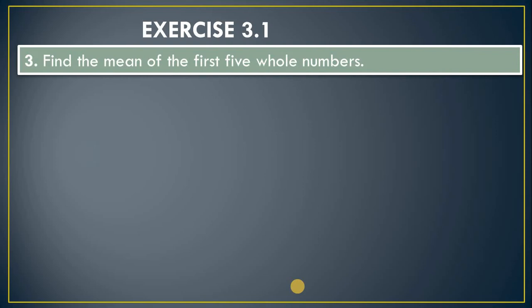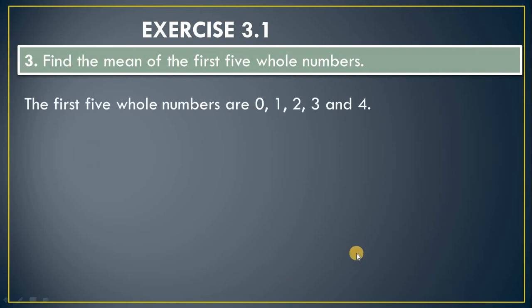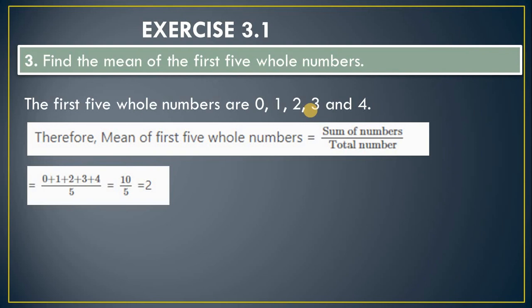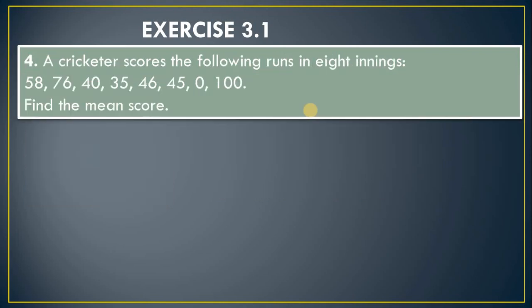Exercise 3.1, Question 3: Find the mean of the first five whole numbers. Whole numbers start with zero: 0, 1, 2, 3, 4. Addition of all observations divided by 5 gives 10 ÷ 5 = 2. The required mean is 2.